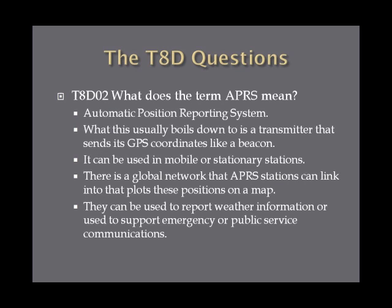What does the term APRS mean? APRS stands for Automatic Position Reporting System. Basically, you have a transmitter that transmits GPS coordinates like a beacon, and there's a global network that these APRS stations can link into that plots these positions on a map. It can be mobile or stationary, and can be used to support weather information or emergency and public service communications.